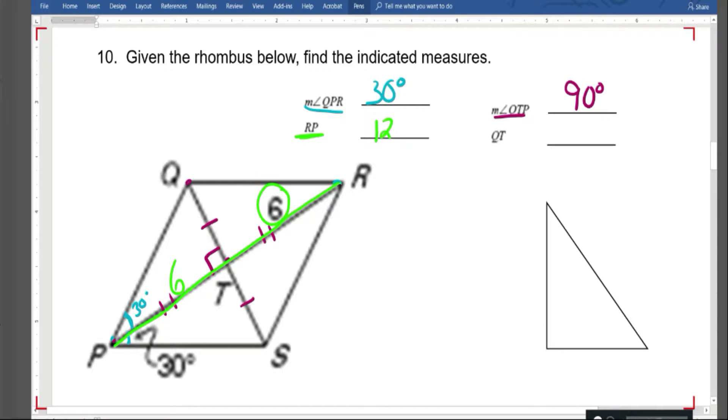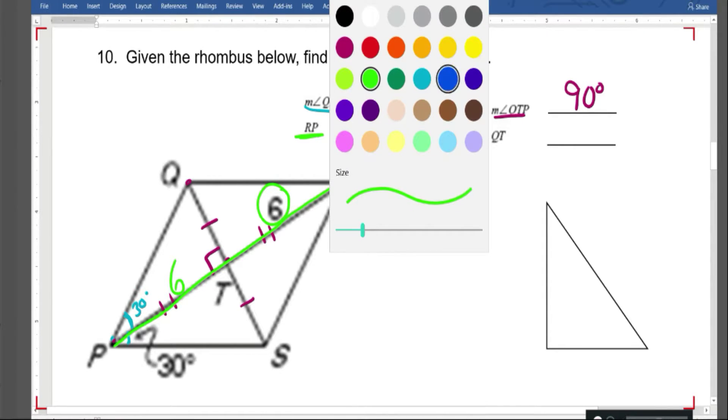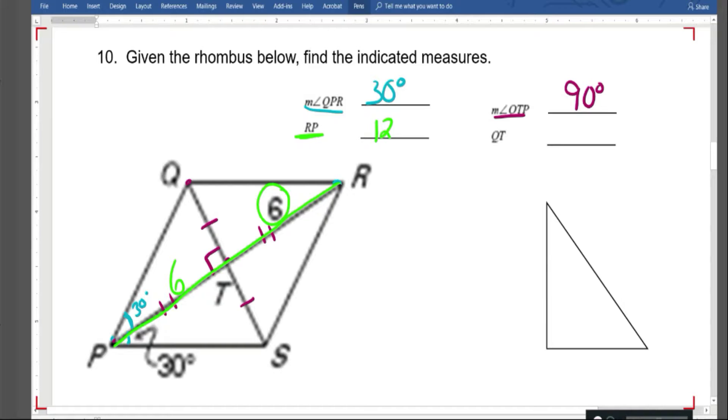I'm already three quarters of the way done. So the last thing I'm looking for, I probably should have gone ahead and erased it. But if this is 30, we know this is 30. These are alternate interior angles. This green line would be a transversal. That would make this 60 degrees.